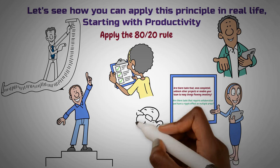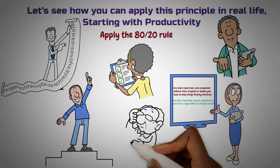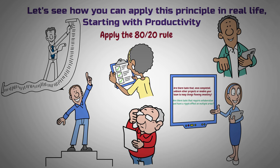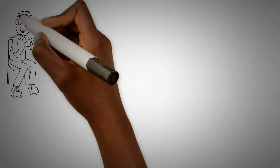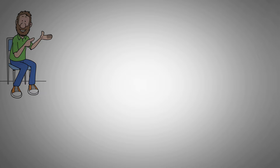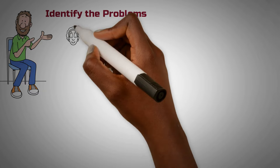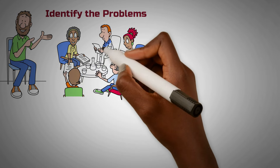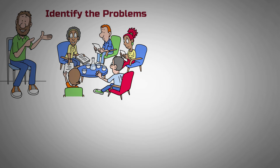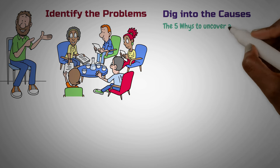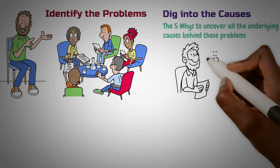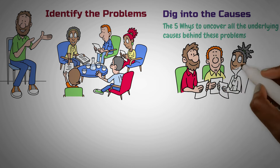The Pareto Principle isn't just handy for productivity — it's also a powerful tool for decision-making, especially when tackling complex problems. Here's how you can apply it to make better decisions. First, identify the problems: pinpoint the issues your team is grappling with — these are the problems you need to solve. Second, dig into the causes: use methods like the 5 Whys to uncover all the underlying causes behind these problems. Understanding the root causes is crucial for finding effective solutions.